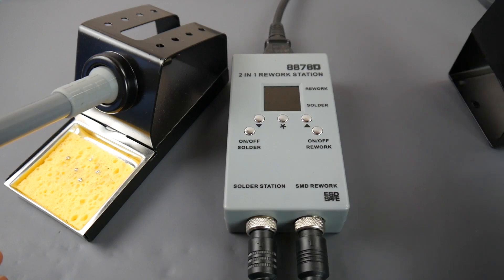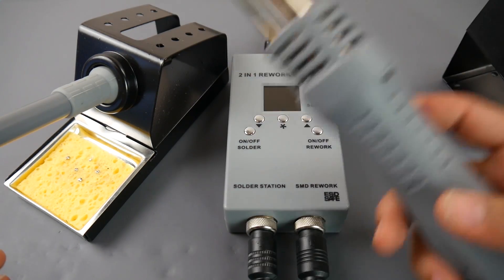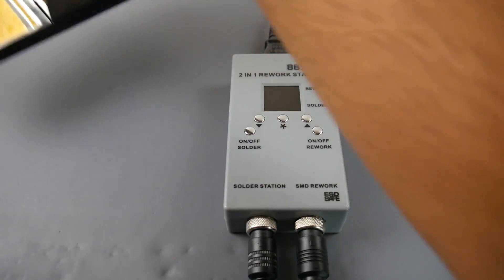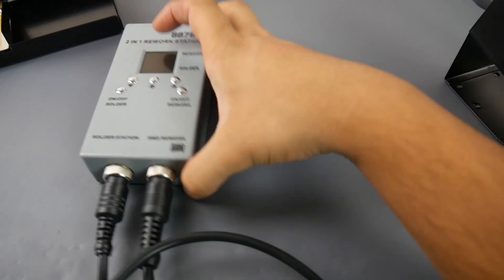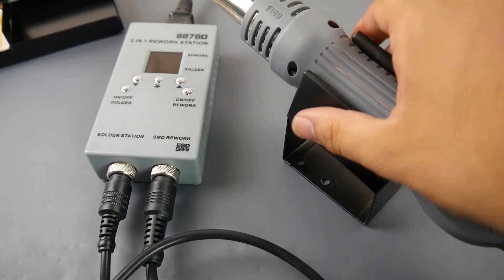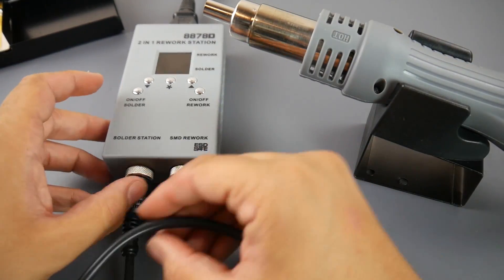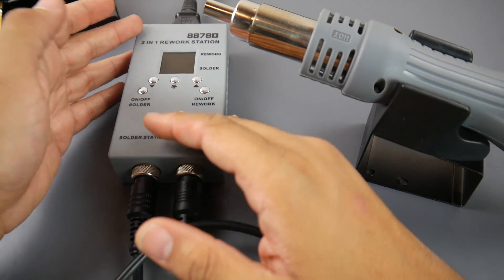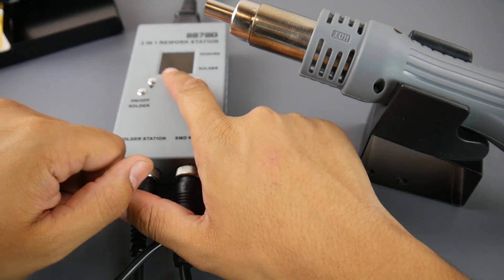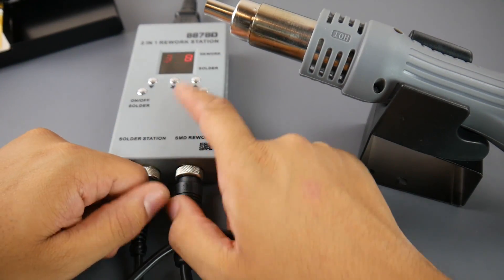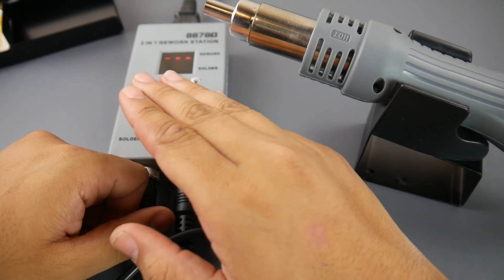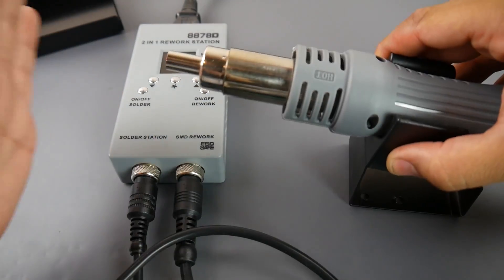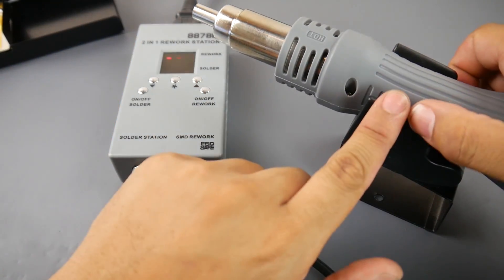Now we want to go to our rework station which is really cool. Let's go ahead and turn on the rework station. It's at 328, it will not boot as long as it's in the handle so you don't burn yourself. Once you pick it up, it'll go ahead and boot up.